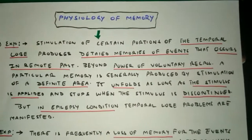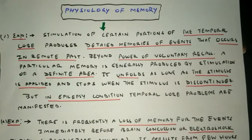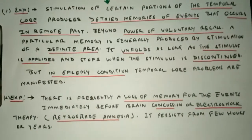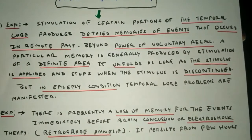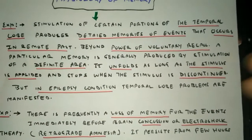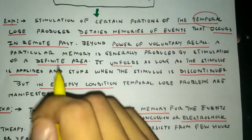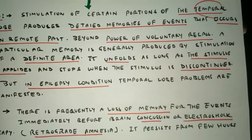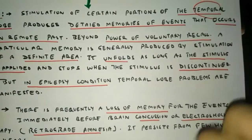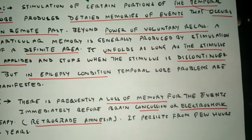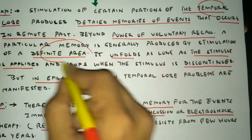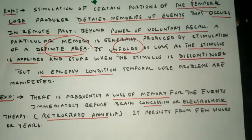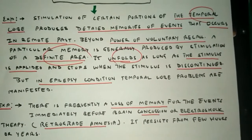Next, the physiology of memory. There are clinical and experimental evidences that tell us how memory actually works. Two experiments are discussed. First, stimulation of certain brain areas such as the temporal lobe produces detailed memory of events from the remote past — the temporal area controls long-term memory. This particular memory is produced by stimulation of a defined brain area and remains only as long as the stimulus is applied; once removed, the memory vanishes.